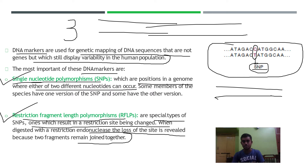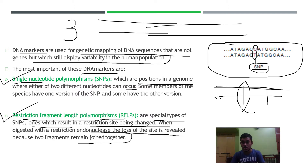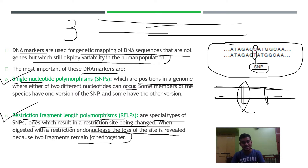DNA sequences have certain restriction sites that are used by restriction endonuclease enzymes. Consider a particular DNA sequence — it has restriction sites at certain positions which are recognized by restriction endonuclease enzymes. RFLPs are DNA markers present on DNA sequences that remove or alter those particular restriction sites.